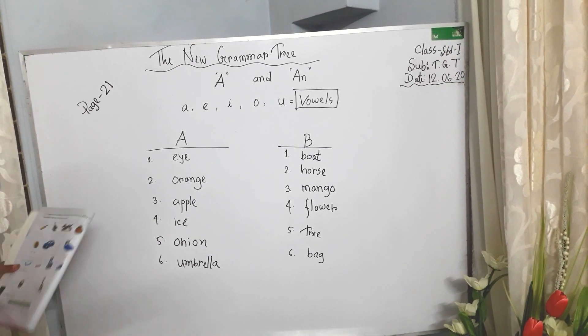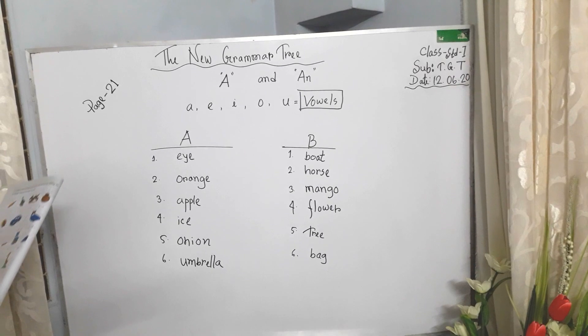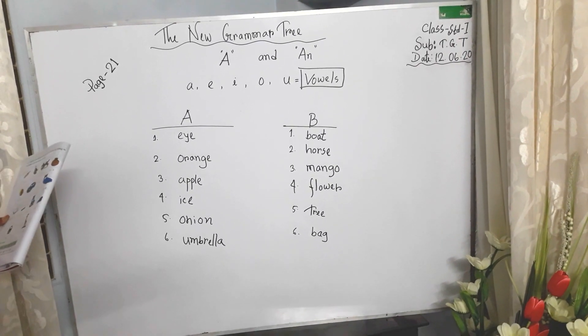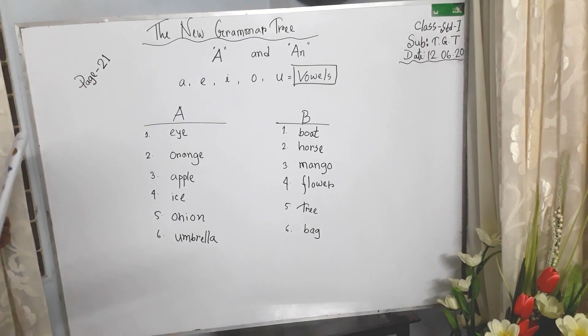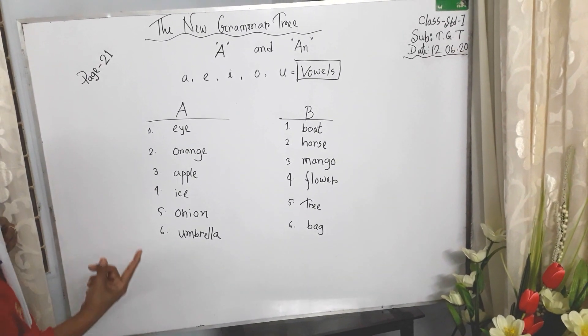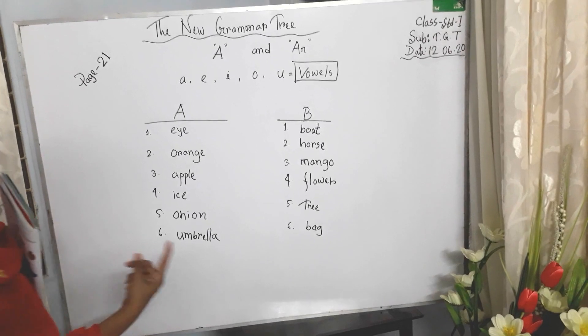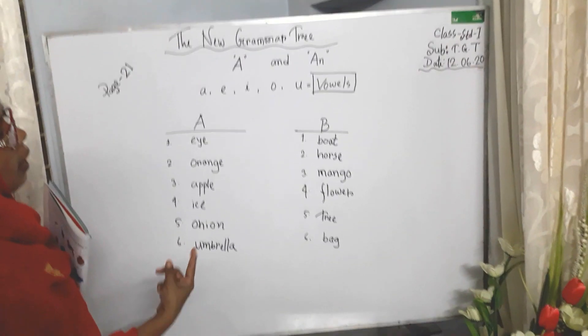But we usually say: a book, a pencil, a bag, a lady, or a boat, a horse, a mango, a flower, a tree, a bag.